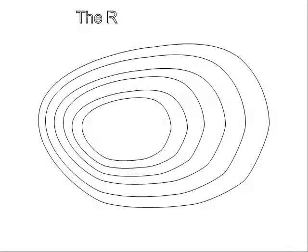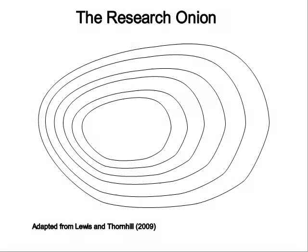Let's unpack the research onion a little further to better understand how our ontological and epistemological views shape our approach to research. The outer layer of the research onion relates to our philosophy — our ontological perspective, whether we believe there is an objective reality or not, and our epistemology, how we believe we can come to know knowledge given our ontology.